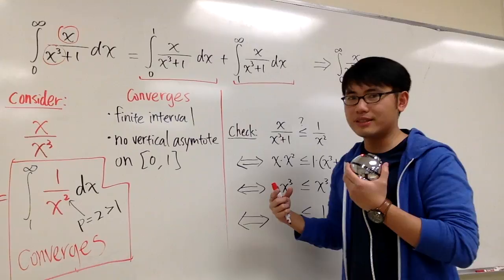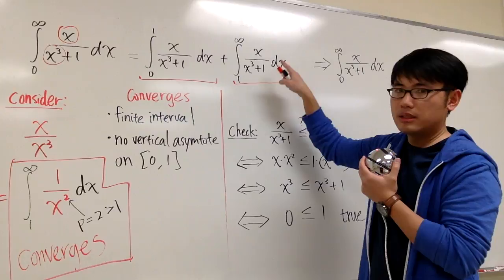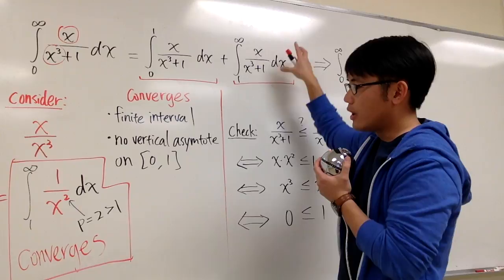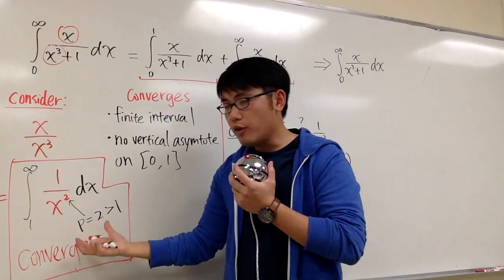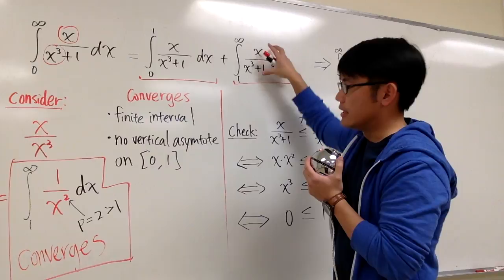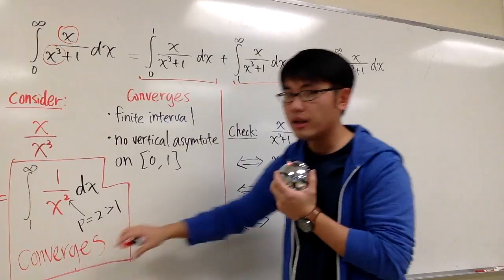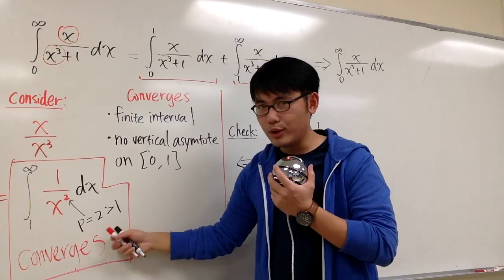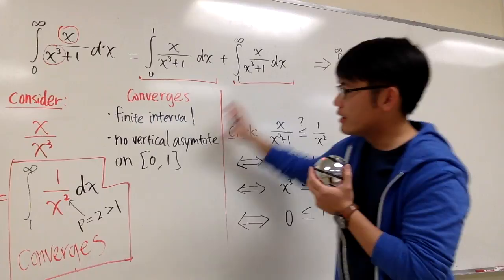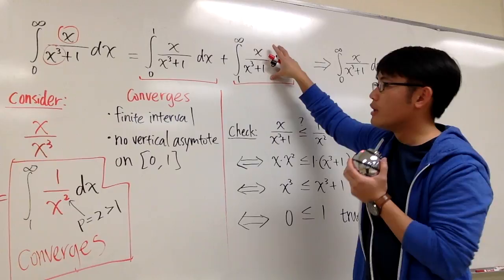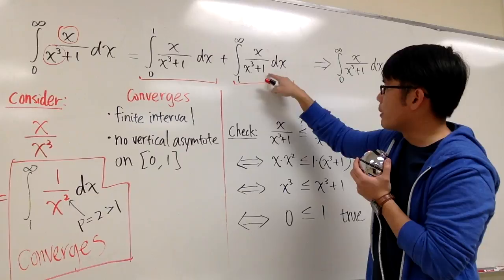Now for the piece from 1 to infinity of x over x to the third power plus 1 dx, we want to make a comparison. The strategy: if we can show this is smaller than a convergent integral, then it must be convergent as well. An integral being convergent means it has a finite value, and if we are smaller than a finite value, we must also be finite.